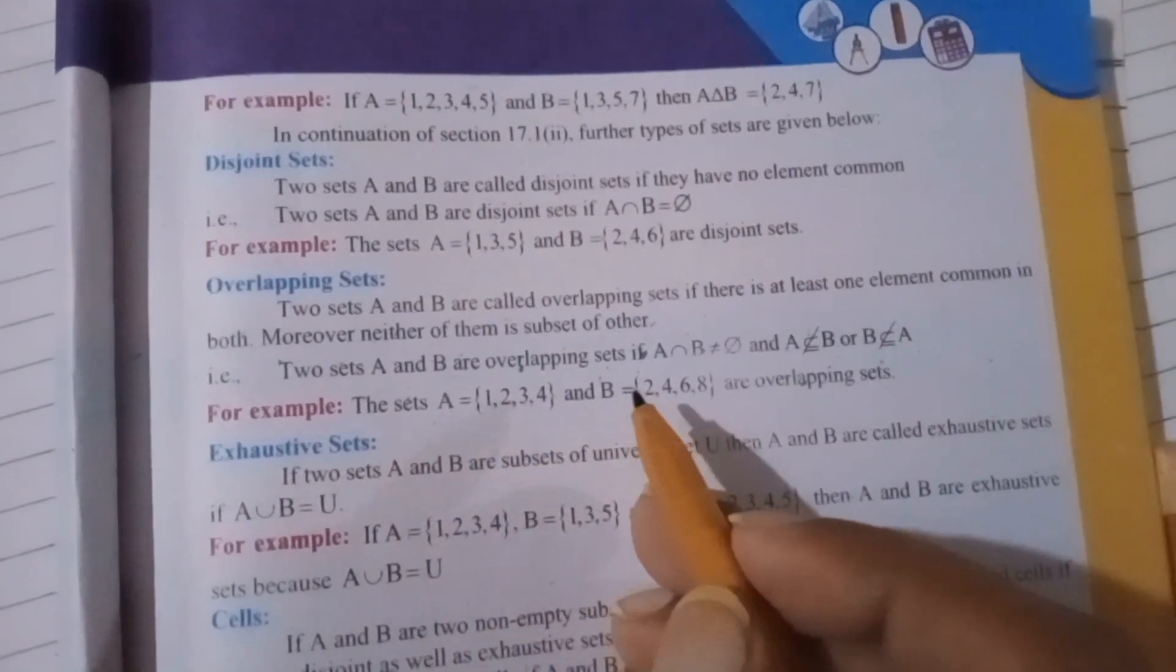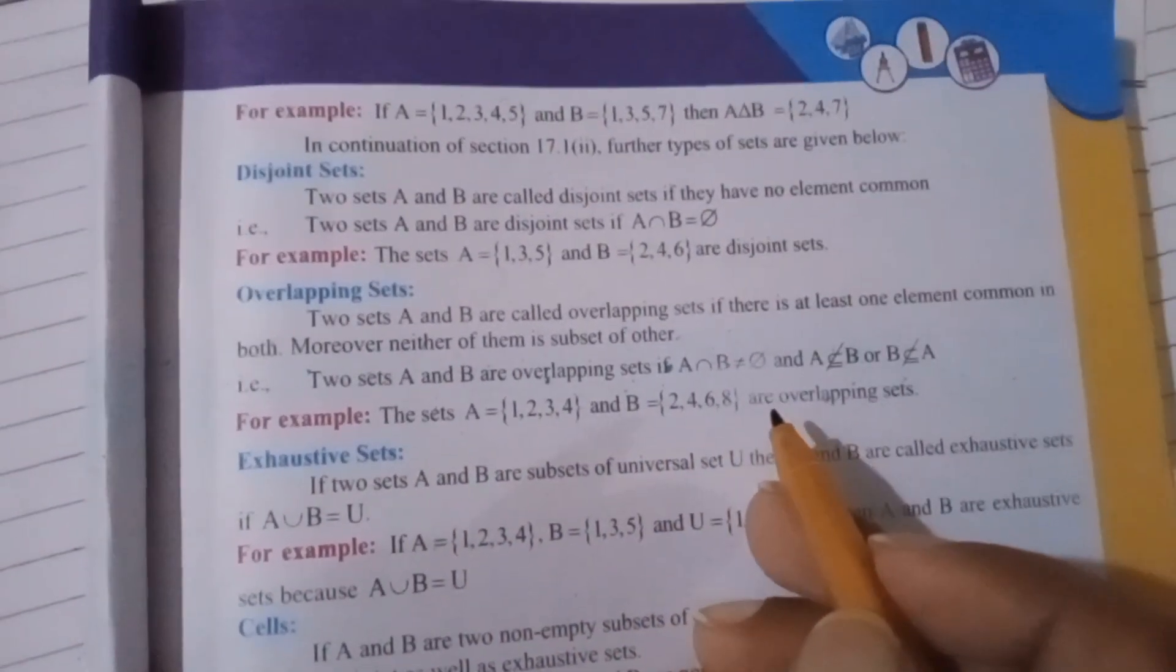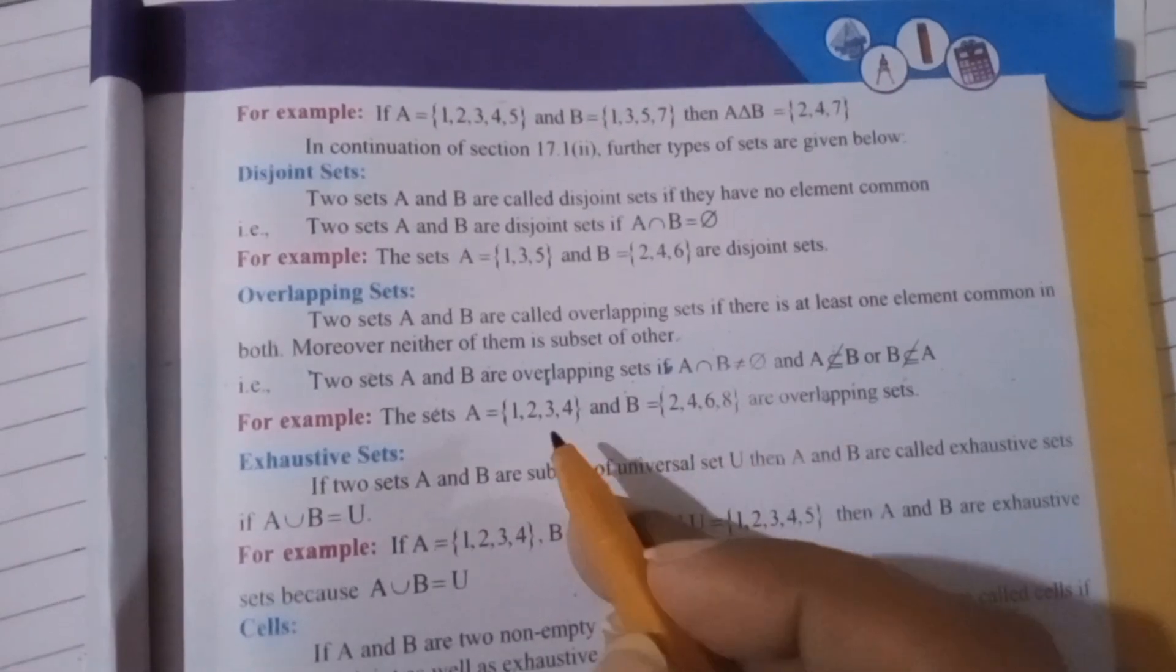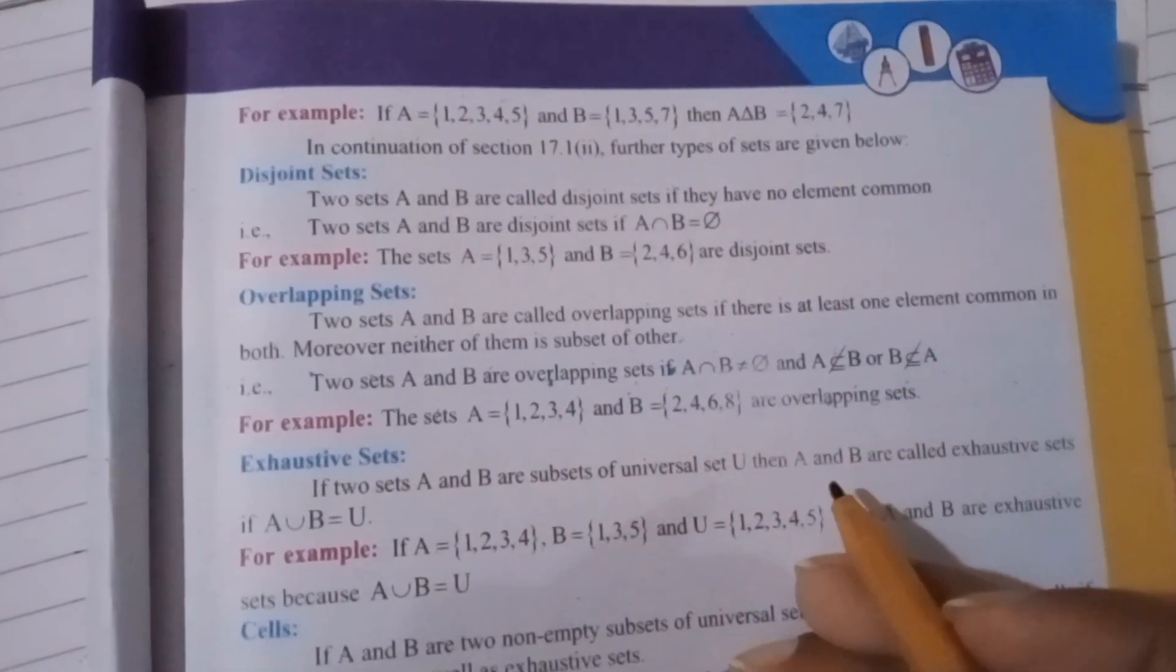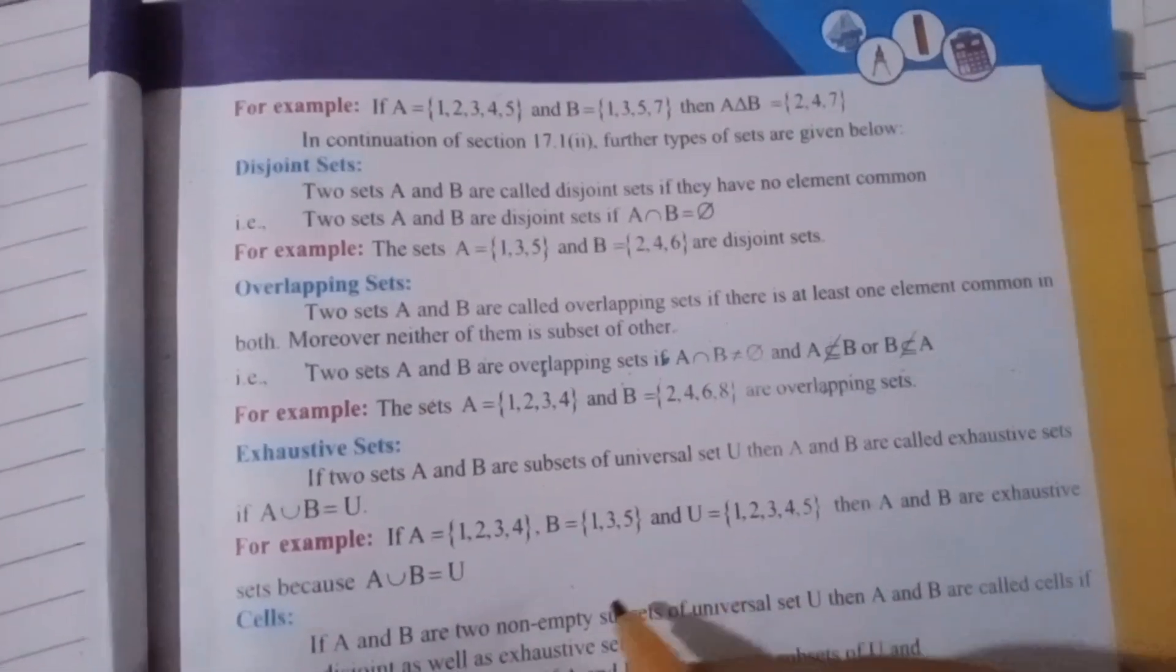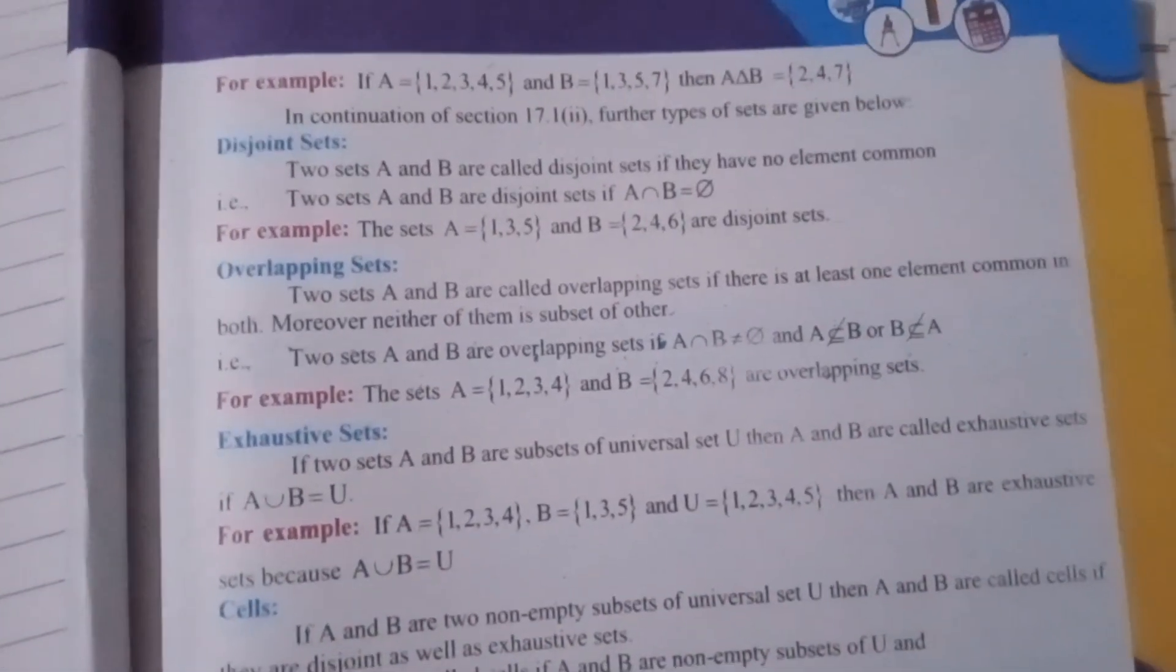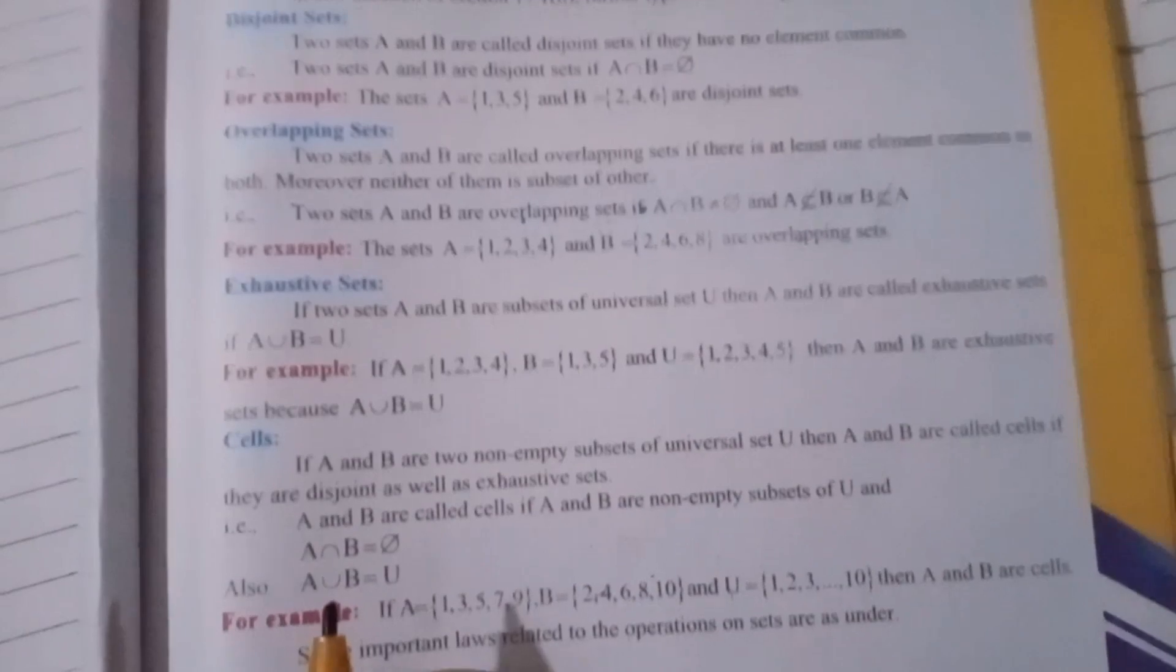For example, the set A equals {1,2,3,4} and B equals {2,4,6,8} are overlapping sets because 2 and 4 are common elements in both A and B. So if we have intersection between them, the result is not the null set.